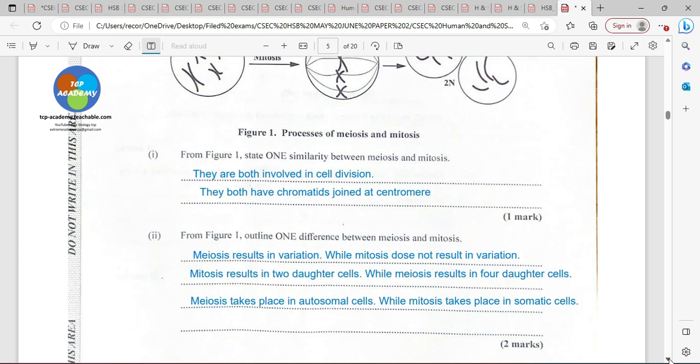Meiosis takes place in autosomal cells, which are our sex cells, sperm and egg, while mitosis takes place in our somatic cells. Asked only for one, but for your purposes, I would have given more than one.